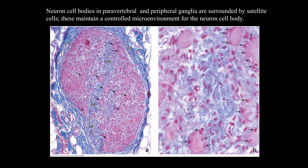Here, some neuron cell bodies in a paravertebral ganglion show that the cell bodies are surrounded by satellite cells. Satellite cells are supporting cells that help maintain a controlled microenvironment for the neuron cell body. At higher magnification, you can see the satellite cells surrounding the cell body, with little profiles of the axons nearby.